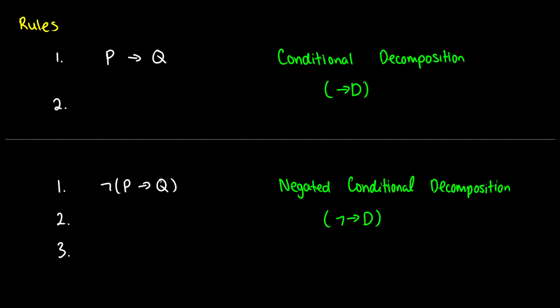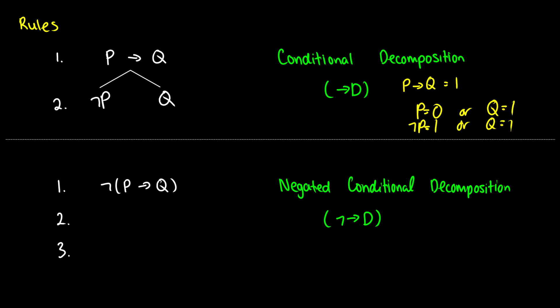Let's start with conditionals. We've got to think about our truth tables again and the truth conditions. When is P arrow Q true? This is true when either P is false or Q is true — the same thing as saying not P is true or Q is true. Therefore, if we have P arrow Q, we're going to get branching paths: either not P is true or Q is true. We justify this from line one and call it conditional decomposition. The conditional works a lot like an OR in this case because of its truth conditions.